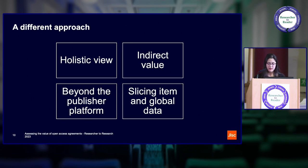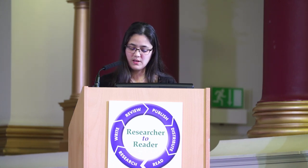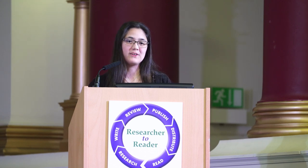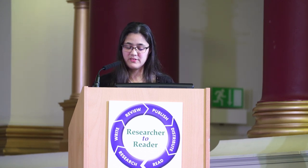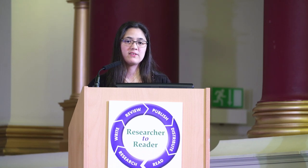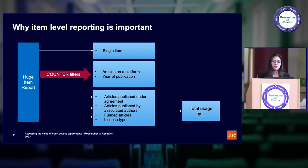We also need to think differently about how we slice the data. Historically, Counter data has been about the publisher, the platform, and the institution at title level. This makes a lot of sense for subscription content, because Counter was developed in line with that. When I first tried to explain global and item usage, especially to subscriptions librarians, they don't always get it straight away — it takes them a little while to get their head around it because they can't really visualise what a report looks like and what data it will contain. We need to think about how we slice the data very differently.